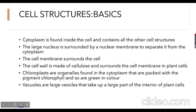The role of the nuclear membrane is to separate the nucleus from the cytoplasm. The cell membrane is the outer layer that protects the contents of the cell — for example, the nucleus, mitochondria, etc. The cell wall surrounds the cell membrane; it's made up of cellulose and is found only in plant cells. Chloroplasts are also found in plant cells, as they are required for photosynthesis.